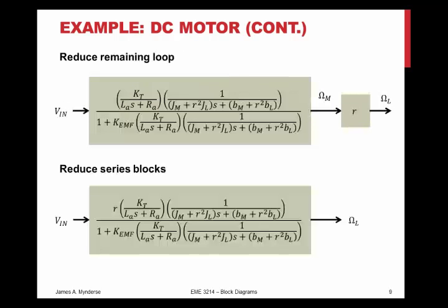And if I close that remaining loop, then it's a series connection with R. So here we go. If I've closed that remaining loop, it's a much more complicated equation, but it's still just one equation in series with an R. And if it's in series, I can multiply that R in. And that gives me one, sorry, one block between V in and theta sub L.